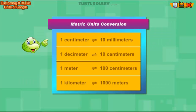Metric unit conversion. Here you can see the conversion table for all metric units. 1 centimeter equals 10 millimeters, 1 decimeter equals 10 centimeters, 1 meter equals 100 centimeters, 1 kilometer equals 1,000 meters.